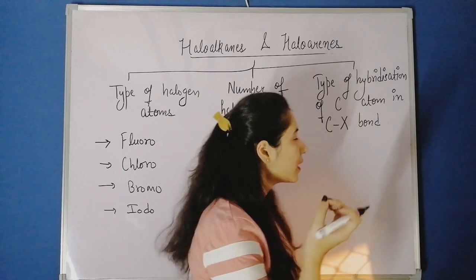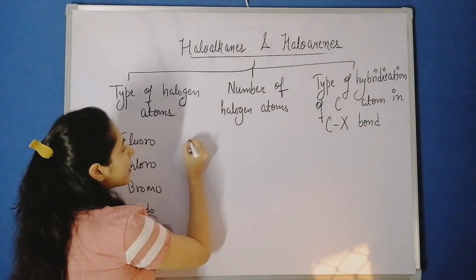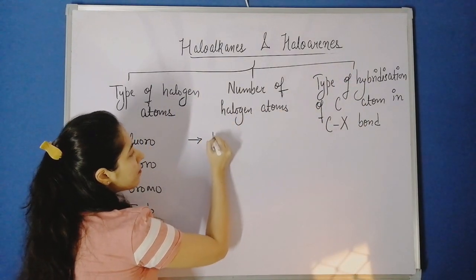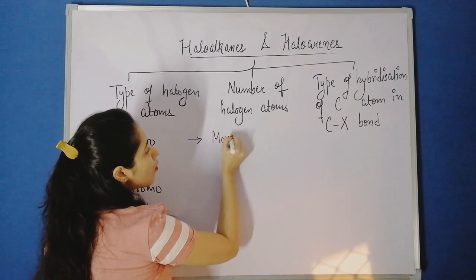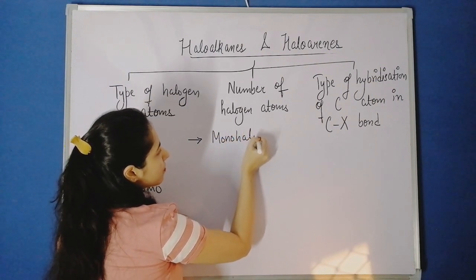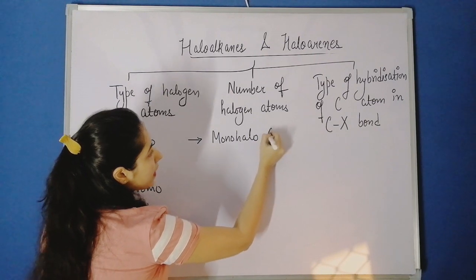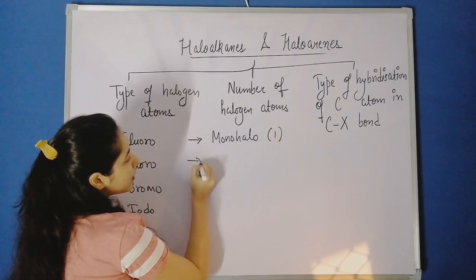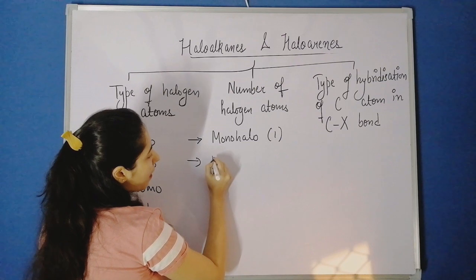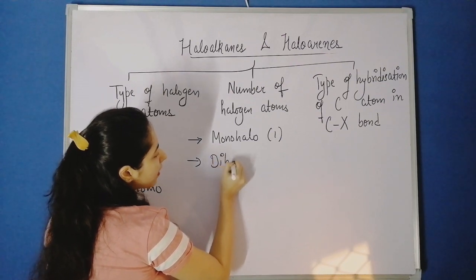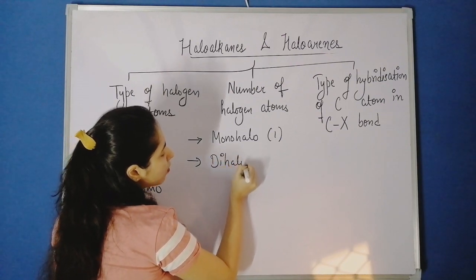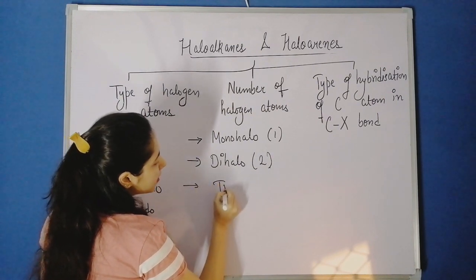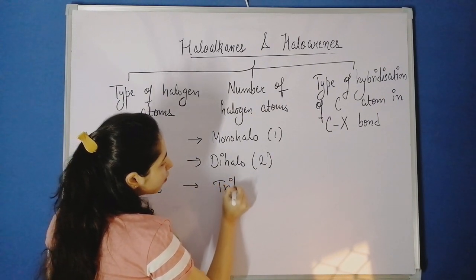If we have one halogen atom present, then the compound is known as a monohalogen compound. If there are three halogen atoms, we can call it a trihalogen compound.